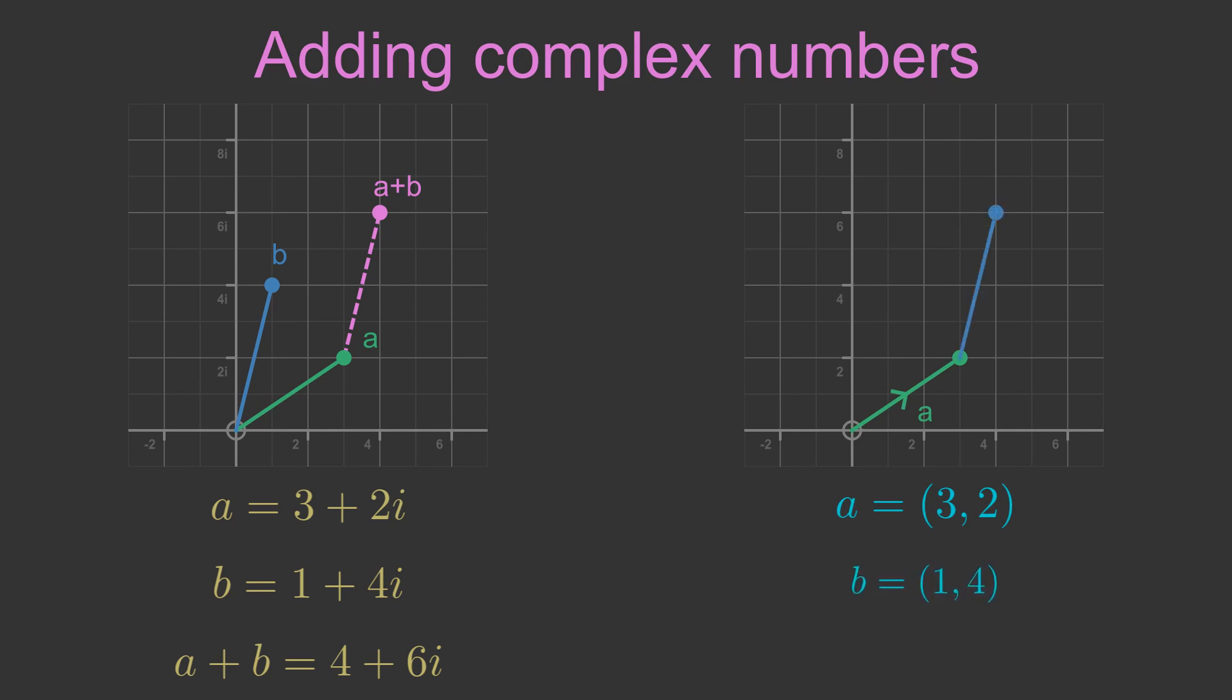We can add vector b by placing it at the end of vector a. Vector b is 1, 4, which is the vector equivalent of the complex number 1 plus 4i. The sum of the two vectors is 4, 6, which is the vector equivalent of 4 plus 6i. So adding two vectors gives an equivalent result to adding two complex numbers.